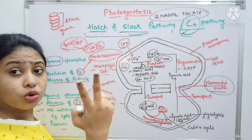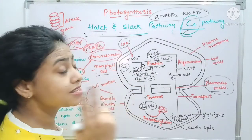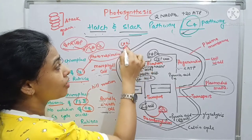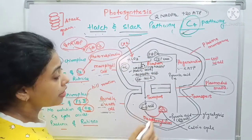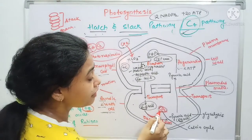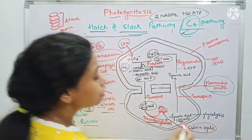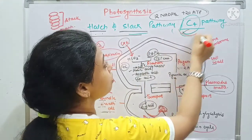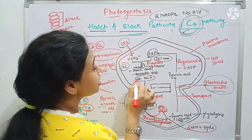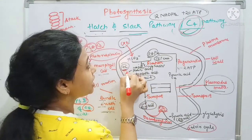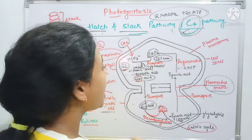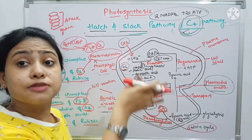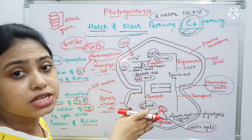One more thing: here two-time carboxylation, or double carboxylation, is taking place. First, CO2 is being fixed in the mesophyll cell — this is the first carboxylation. And the CO2 which is released in the bundle sheath cell also gets fixed through the Calvin cycle — this is the second carboxylation. It is called the C4 pathway because the first product is a 4-carbon compound. And there is no photorespiration taking place in C4 plants — that is why this cycle is more efficient compared to the C3 cycle.